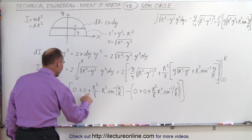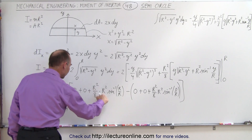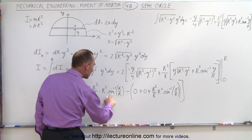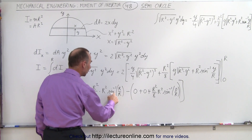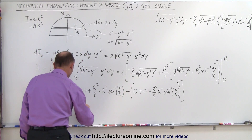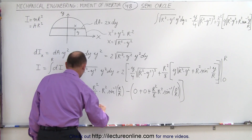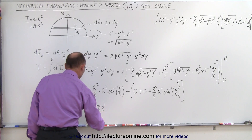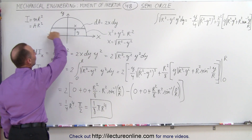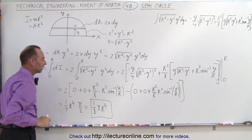So the only surviving term gives us: 2 times r² over 8 — that's one quarter — times r² times r², which is r⁴, times the arcsine of r over r, which is the arcsine of 1, which is π/2. This equals (1/8)πr⁴. And this is indeed the moment of inertia of a semicircle referenced to the x-axis, when the semicircle sits on the x-axis.